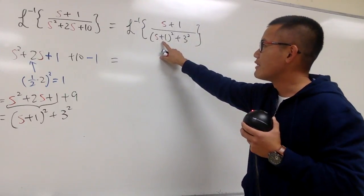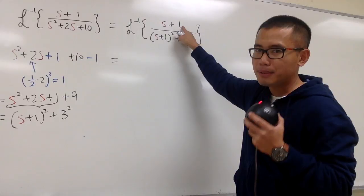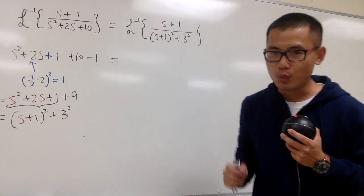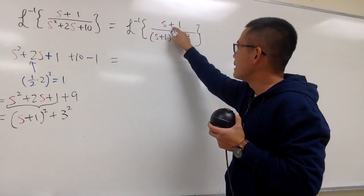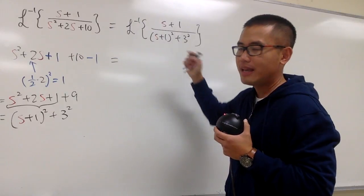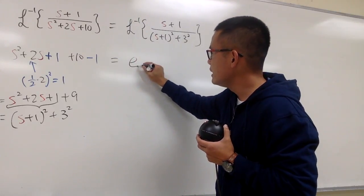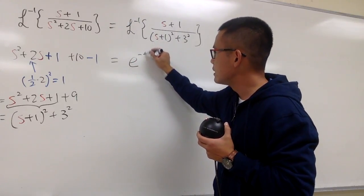but you see, we have plus 1 plus 1. You have to look at the plus 1s, minus negative 1. Okay, s minus negative 1, s minus negative 1. And you know, you will have to multiply by e to the negative 1t.